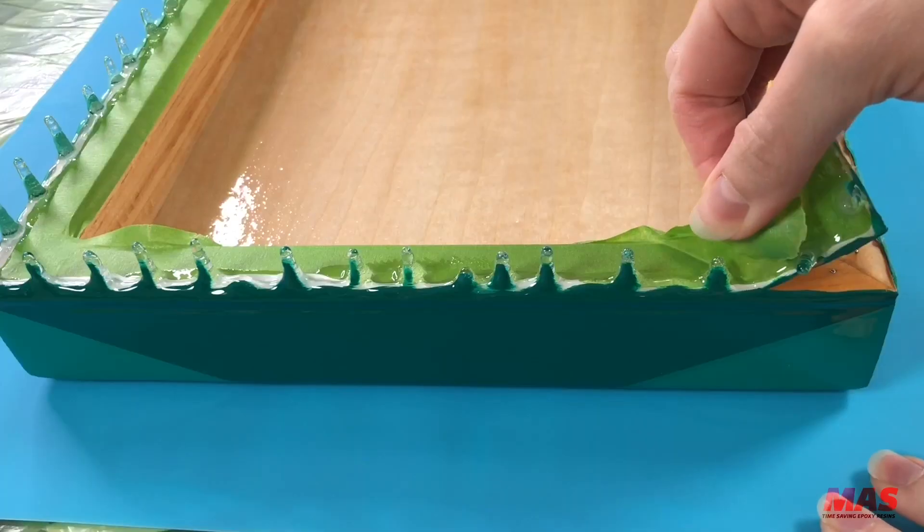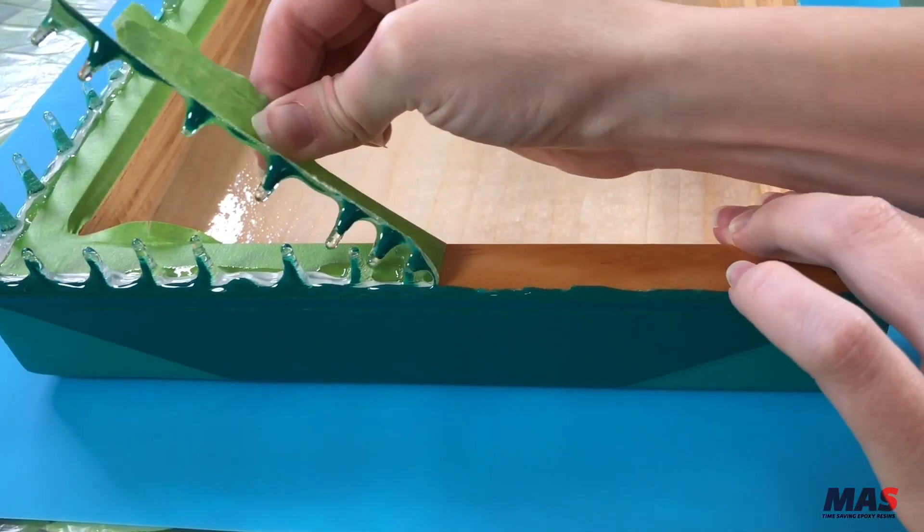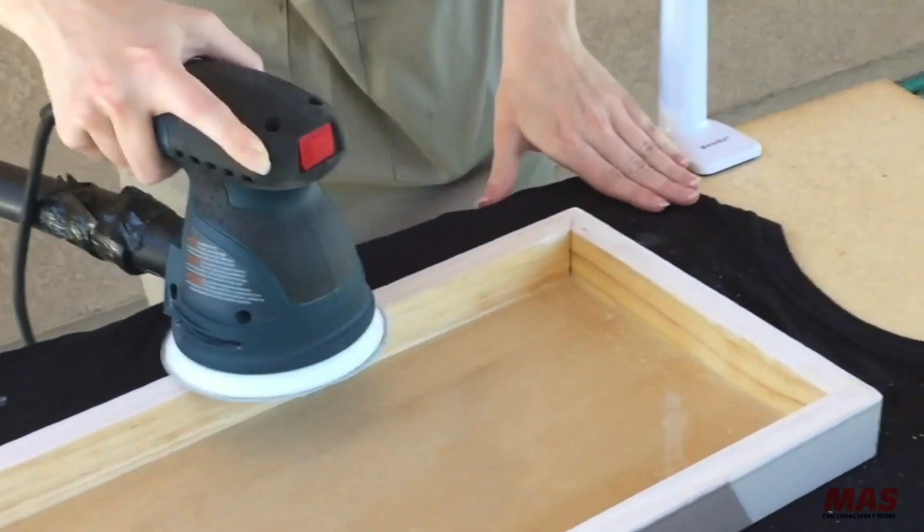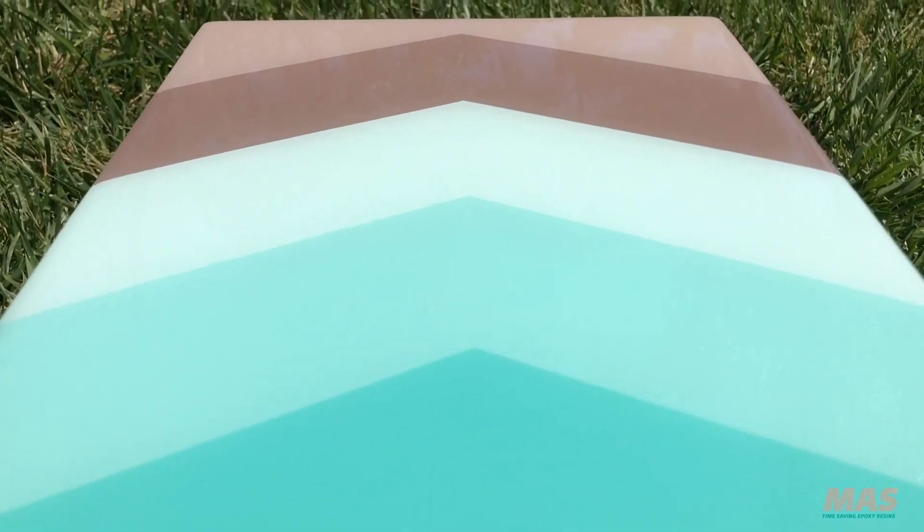With a heat gun soften the resin drips to easily remove the tape and drips from the back of the panel. With a palm sander smooth out any ridges and wipe clean. For the finishing touch don't forget to sign your work of art.